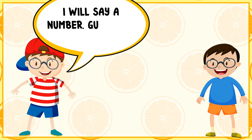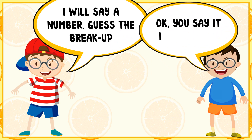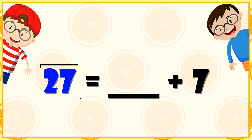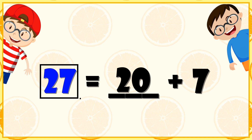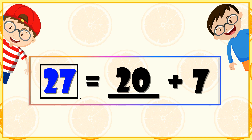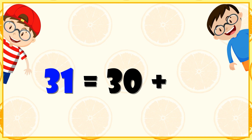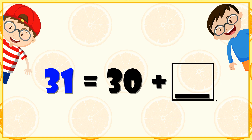I will say a number, guess the break up. 27 is equal to dash plus 7. So what will make 27? 20. Next: 31 is equal to 30 plus what? Here 1 will come — 30 plus 1 makes 31.